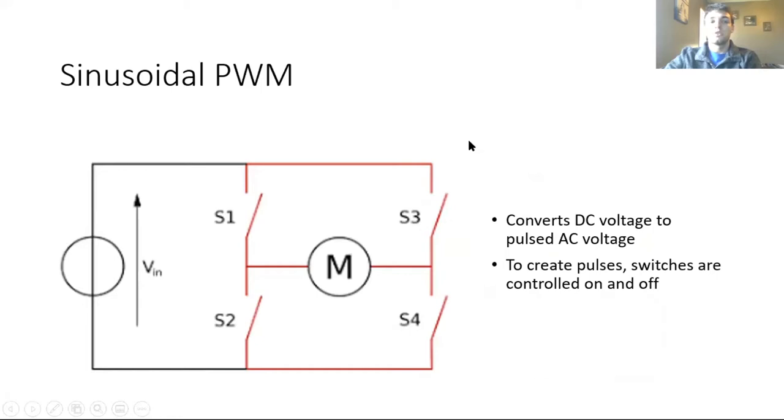So we're going to start with sinusoidal pulse width modulation which converts a direct current voltage into a pulse AC voltage.